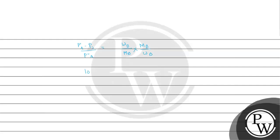The initial vapor pressure was 100, and it reduced to 80, so the change is 20 out of 100. On putting the values: weight of solute is 8 grams, molecular weight of solvent is 114, and weight of solvent is 114 — these cancel out. So molecular weight of solute equals 8 multiplied by 100 divided by 20, which gives 40 gram per mole.